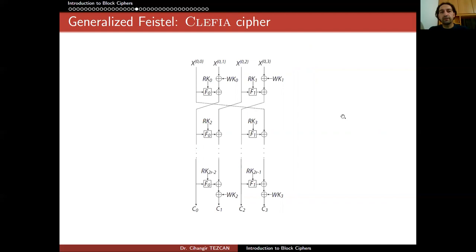Here's an example — a generalized Feistel network. Instead of two lines, you can see there are four lines here. This is the picture of the CLEFIA block cipher, which is again the ISO standard for lightweight cryptography. This cipher has a block size of 128 bits, so each line represents 32 bits of information. The leftmost 32-bit part goes to the rightmost position without any effect on itself, but it affects the second line. You repeat this process many times depending on how many rounds the cipher has.